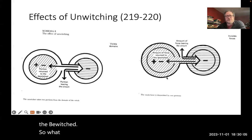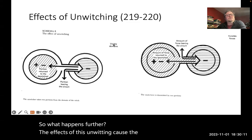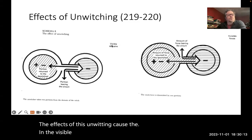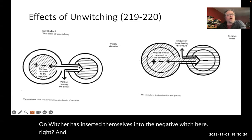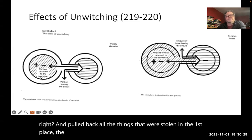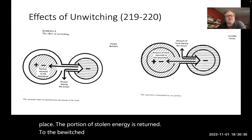So what happens further? The effects of this unwitching cause the, in the visible domain, we see that the unwitcher has inserted themselves into the negative witch here, right? And pulled back all the things that were stolen in the first place. The portion of stolen energy is returned to the bewitched. The shoe is on the other foot.